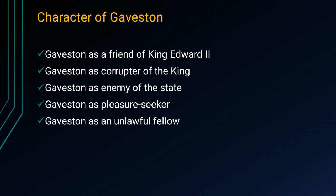The second aspect of the character of Gaveston is that he is a corruptor of the king — all good things in King Edward were being corrupted by Gaveston. When Gaveston comes back, the king starts spending money and neglecting royal responsibility, making Gaveston an enemy of the state. Additionally, Gaveston loves to wear costly dresses, cosmetics, and jewellery, and in the accompaniment of Edward II he enjoys a pleasure-seeking life. As an unlawful fellow, Gaveston does not bother any law or the state — he only considers King Edward II as his friend and pursues a pleasure-seeking life, gradually becoming an enemy to the state.